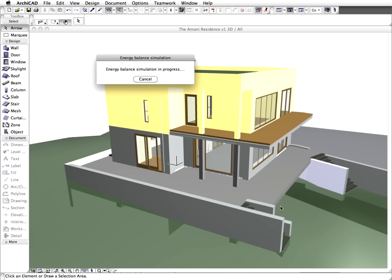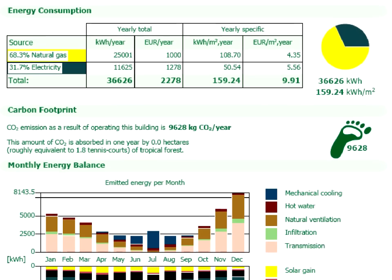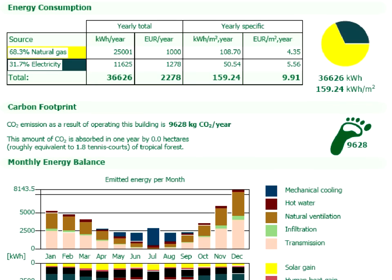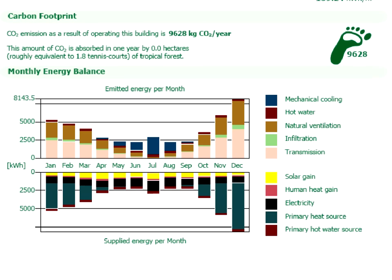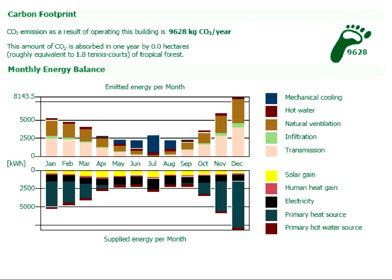Let's start the evaluation again. The Energy Balance Sheet will be displayed in seconds. Notice the huge difference in energy consumption of the building. Both the annual and the specific energy consumption have been reduced by more than 30%. The carbon footprint has also been reduced from 13,000 to close to 10,000 kg of CO2 per year. All of this enormous difference is due solely to the improvement of the thermal properties of the two building structures. Improving the thermal properties of the openings can also cause similar significant improvements in the energy balance of the building.